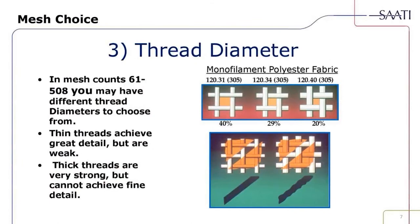Thread diameter: in mesh counts 61 to 508, you may have different thread diameters to choose from. Thin threads achieve greater detail but are weak; thick threads are very strong but cannot achieve fine detail. The illustration shows the 305 mesh at 31 micron, 34 micron, and 40 micron, demonstrating the difference in percentage of open image area — the amount of area that your dot and ink have to flow through. Proper thread selection gives a clean, crisp edge definition, while a thicker thread with improper mesh openings leaves a jagged, chattered edge.